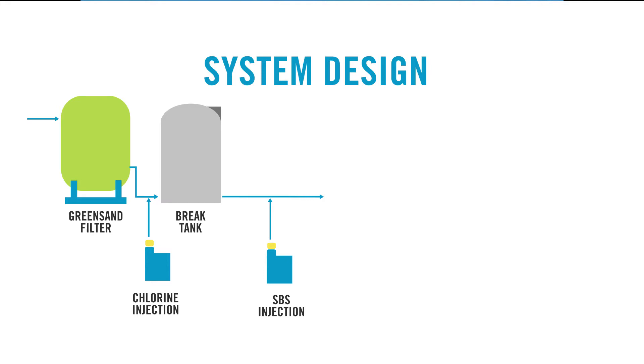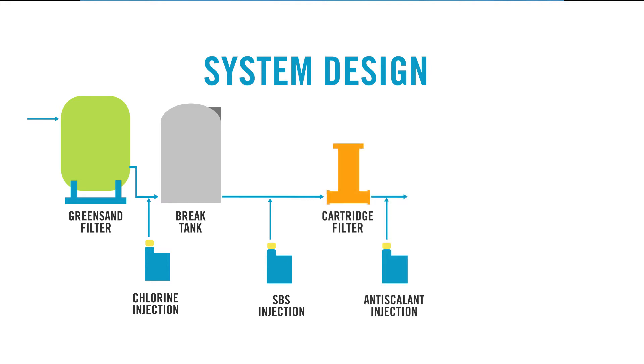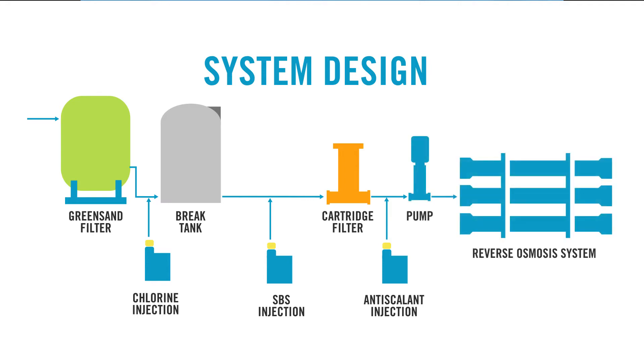After this was a cartridge filter, an anti-scalant injection to prevent scaling of the RO, then the high pressure pump which fed the RO system.